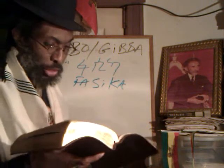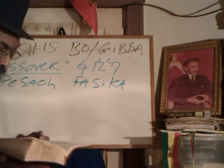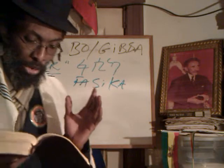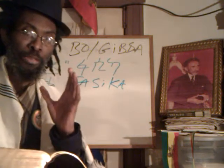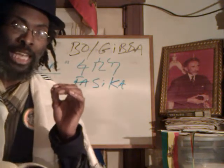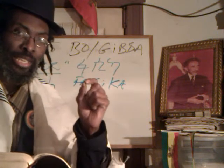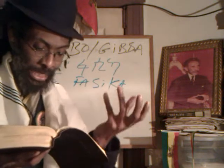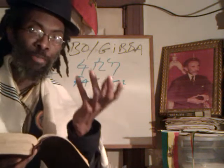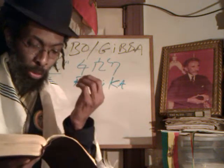We're going to begin from the Schofield right here. Here it says the Passover is a type of Christos — it's a type of Christ, a type of the Moshiach, the Messiah, our Redeemer.